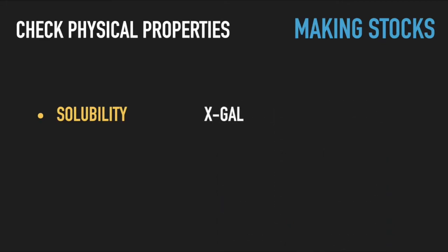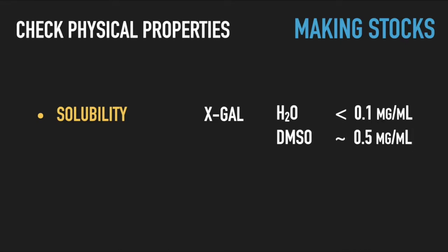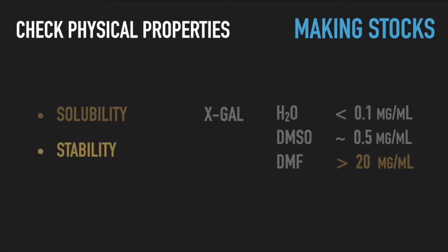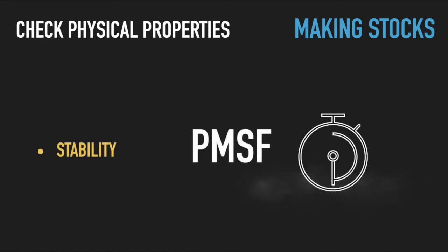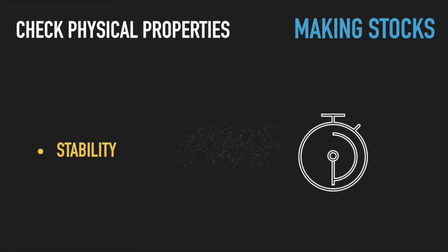Another example is X-gal, a chromogenic substrate of beta-galactosidase used for blue-white selection. X-gal is hardly soluble in water or DMSO but readily dissolves in dimethylformamide. Some compounds, such as the commonly used serine protease inhibitor PMSF, are not stable in aqueous solutions, so that 50% of the PMSF will hydrolyze in half an hour at pH 8.